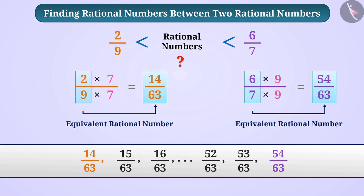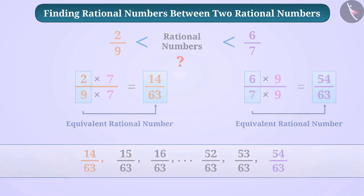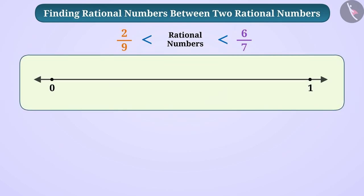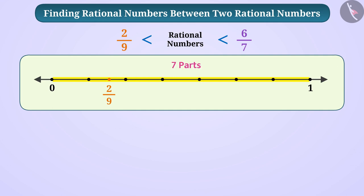Now let's learn another interesting method. We will find rational numbers between 2 by 9 and 6 by 7 by representing them on the number line. Dividing the distance between 0 to 1 into 9 equal parts, we can show 2 by 9 by taking 2 of these parts. Similarly, dividing 0 to 1 into 7 equal parts and taking 6 of these represents 6 by 7. Now we will find the mean of 2 by 9 and 6 by 7.